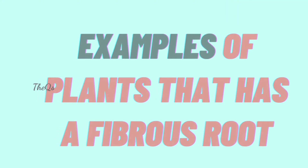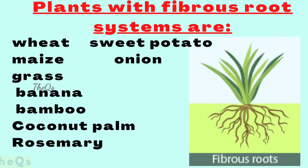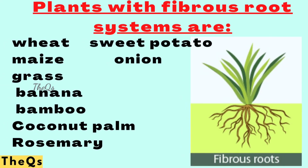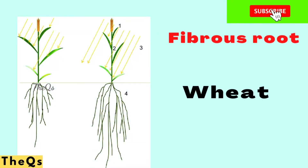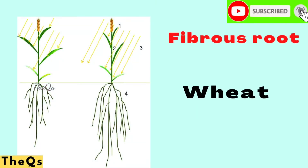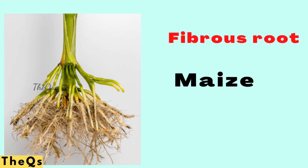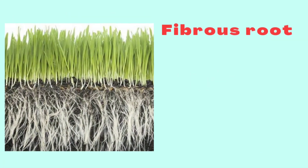Here are the examples of plants that have fibrous roots. First in the list: wheat, maize, grass, banana, bamboo, coconut palm, rosemary, sweet potato, and onion. Look at the wheat — it has fibrous roots. The next one is maize, which also has fibrous roots.